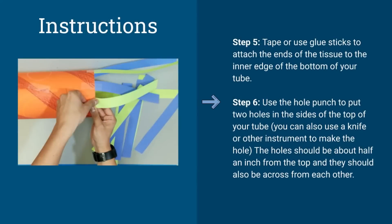Step six. Use the hole punch to put two holes in the sides of the top of your tube. You can also use a knife or other instrument to make the hole, but if you're using something sharp, make sure to have a parent with you. The holes should be about half an inch from the top and they should also be across from each other.